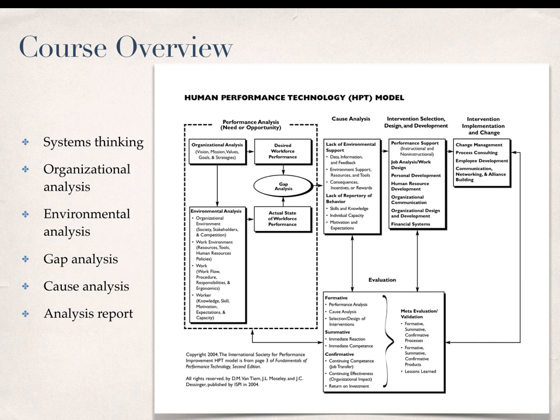When we get into other courses, 6426 gets into intervention selection, design, and development. 6427 addresses implementation and change management, and 6428 addresses evaluation. But all that will come later. Our focus in this course is really on the first two primary areas of the HPT model in the upper left-hand corner, which is performance analysis and cause analysis.